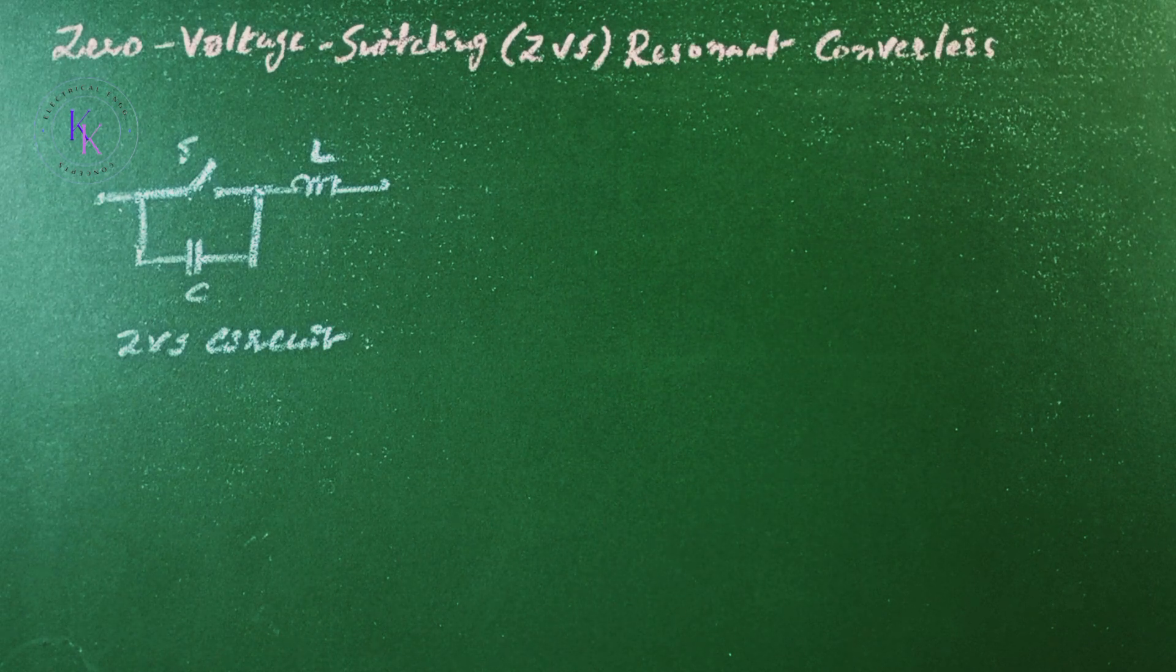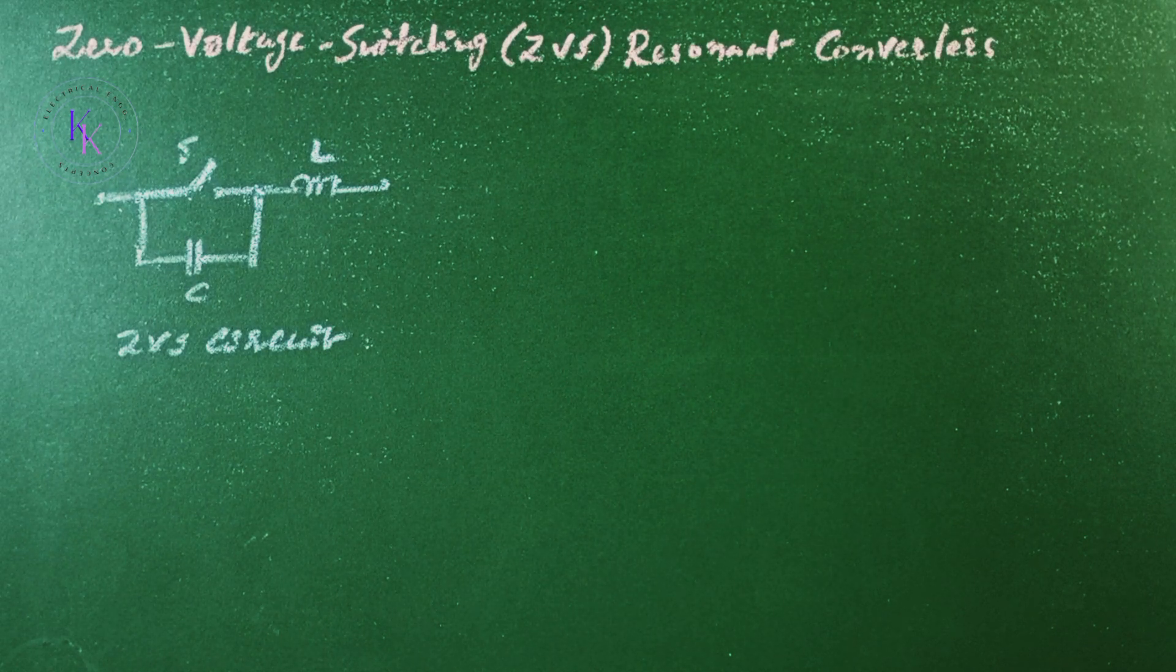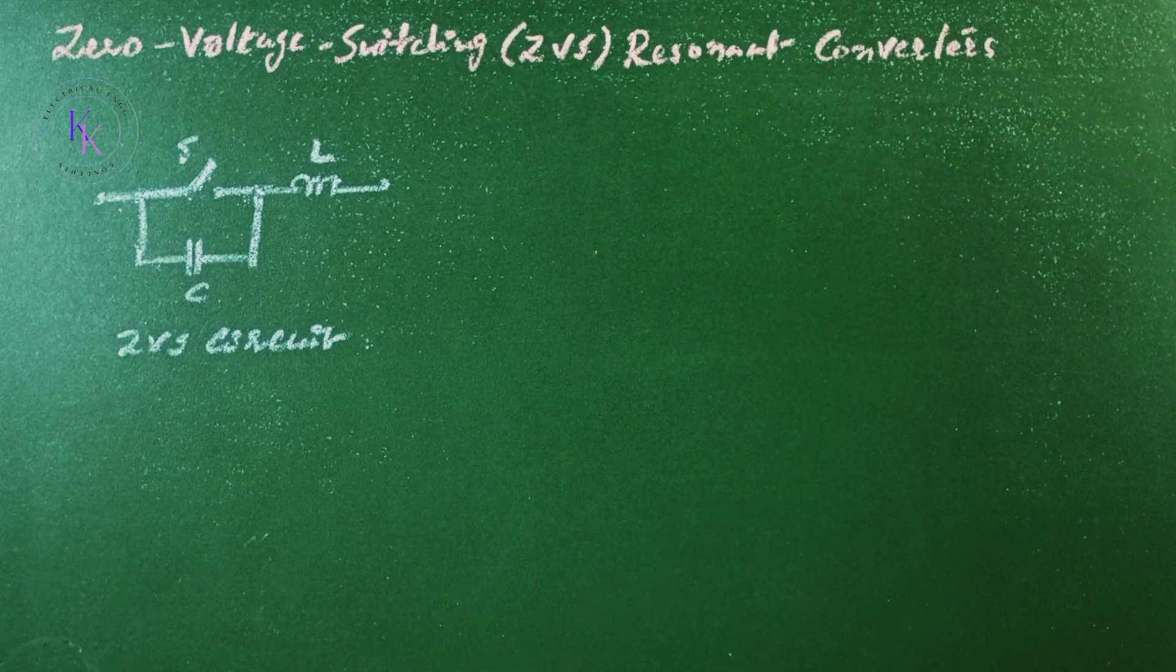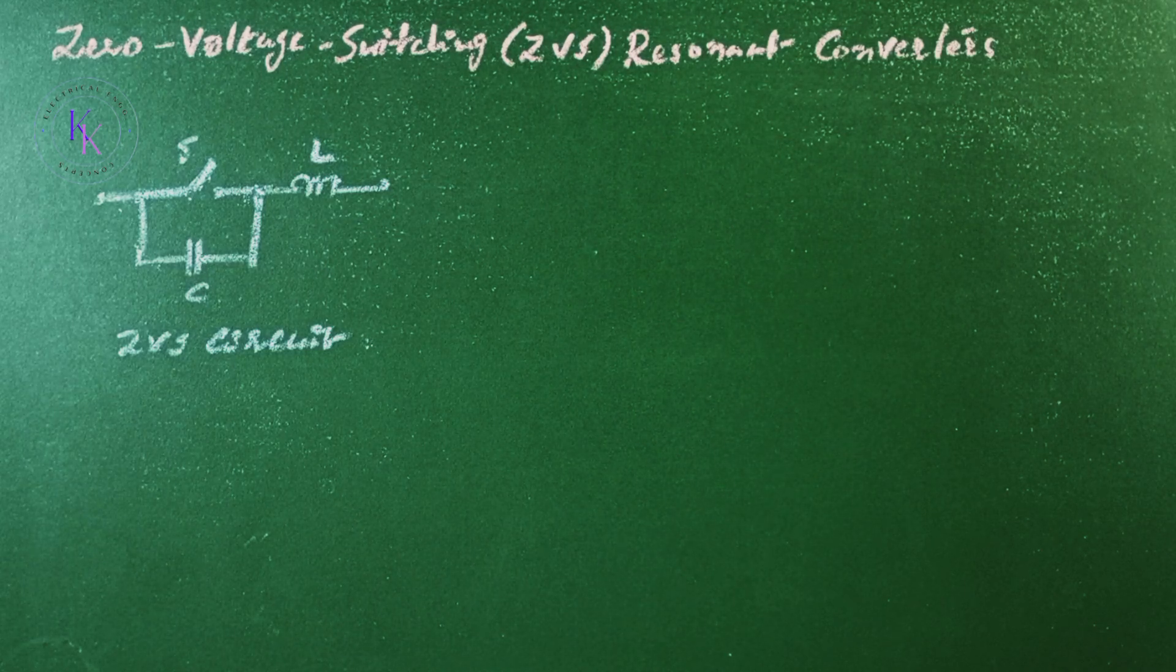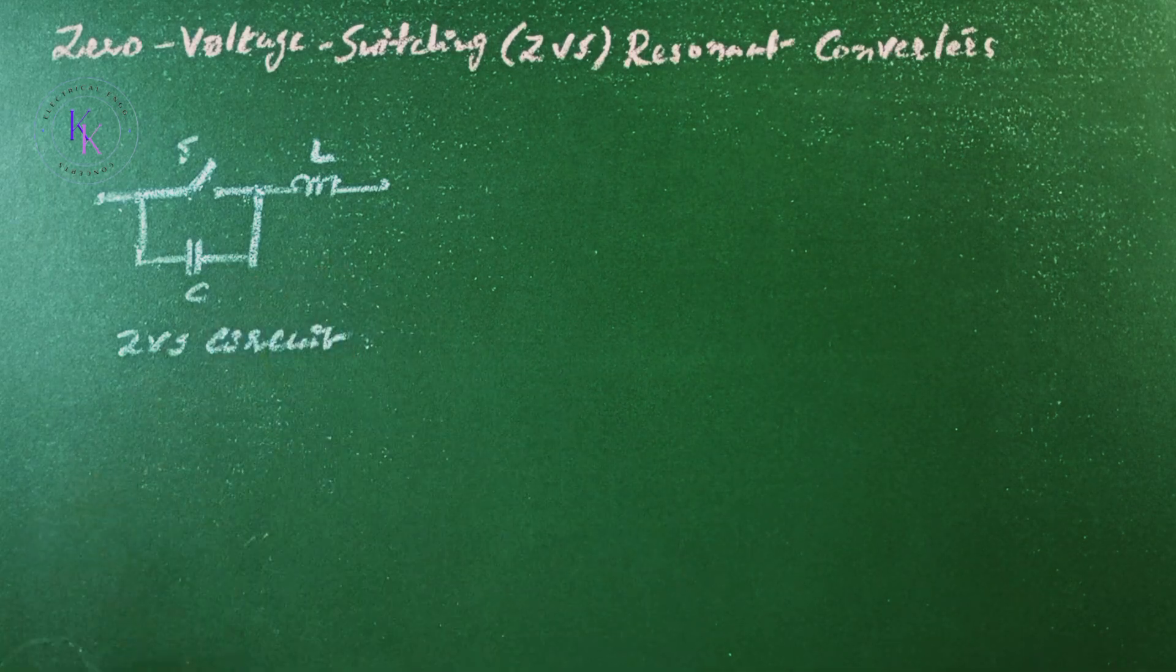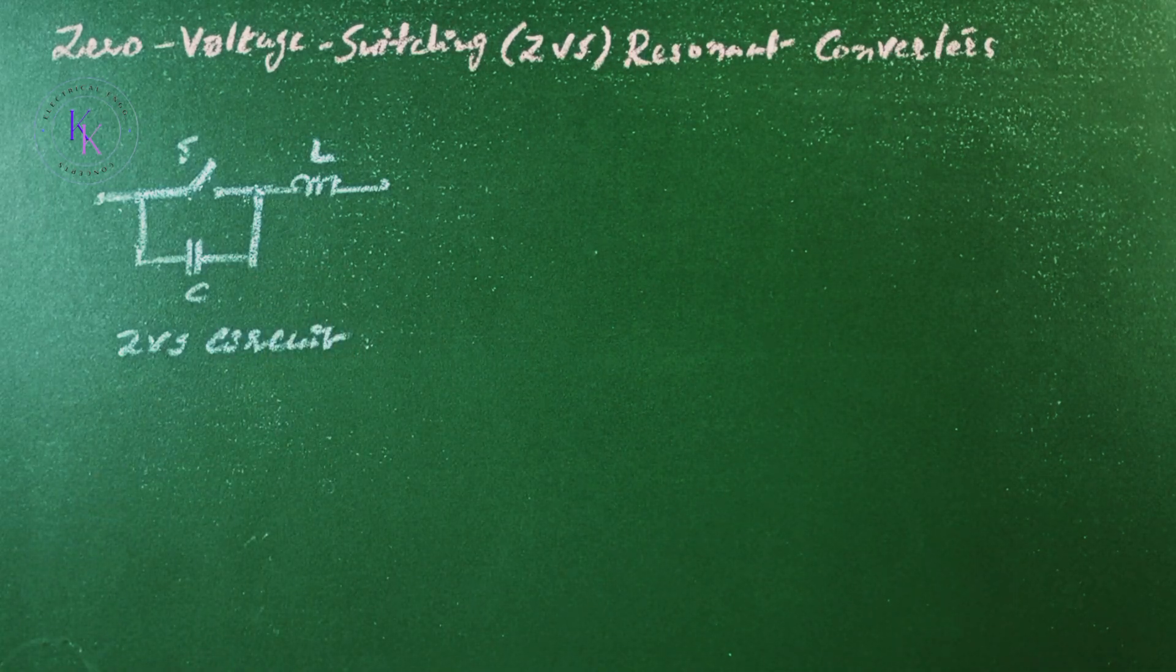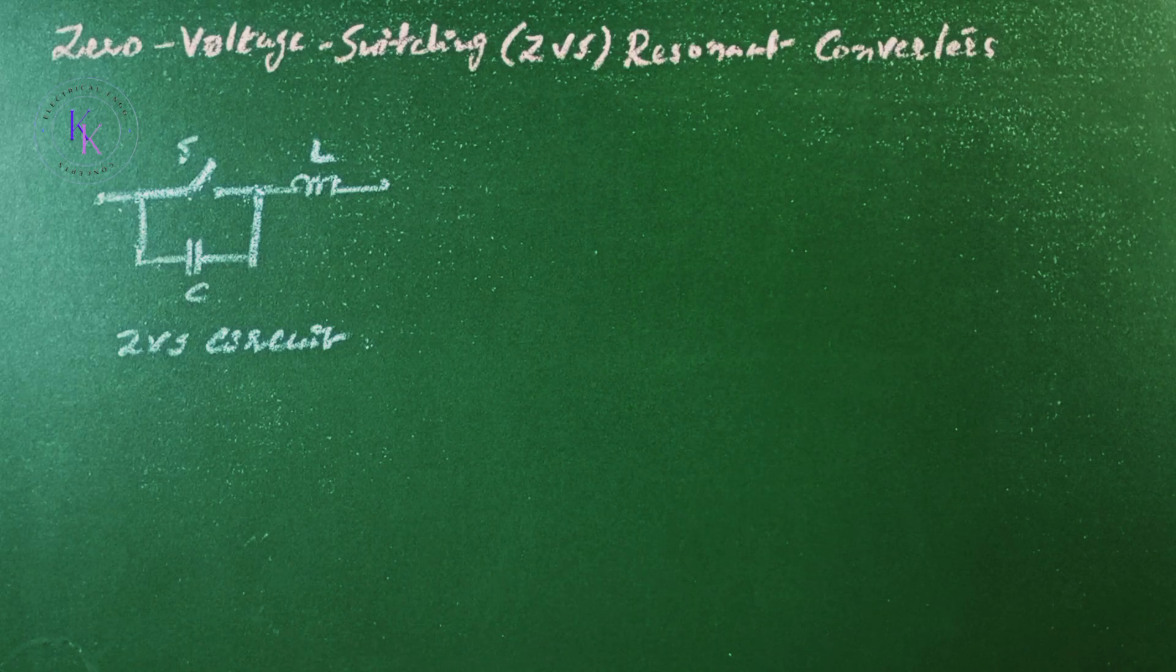Zero voltage switching ZVS resonant converter. The switches of zero voltage switching resonant converter turn on and off at zero voltage. The resonant circuit is shown here. The capacitor C is connected in parallel with the switch S to achieve zero voltage switching.